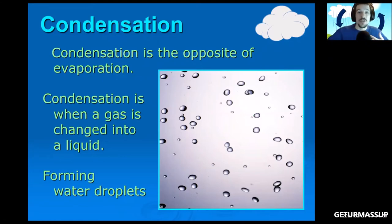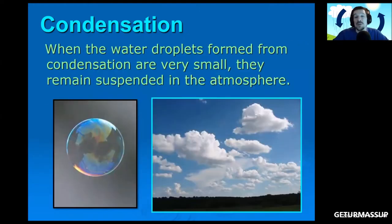Now condensation is the opposite of evaporation. Evaporation is turning water into water vapor. Condensation is going the other way around - we're taking that invisible water vapor and we're cooling it down to turn it back into liquid water. This is forming water droplets. Now when these water droplets are first formed and they're very tiny, they actually remain suspended in the air, and that's what we call clouds. As the water droplets come together, they form larger and larger droplets, and soon they get too big, falling down to the sky, which is precipitation.